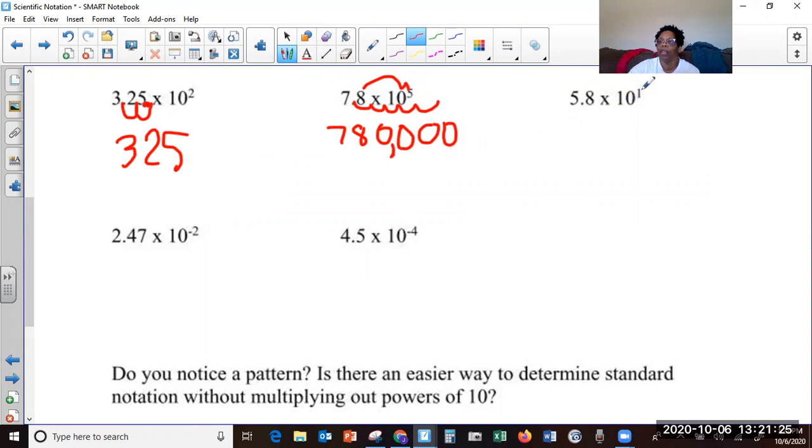This is a one. It tells me move the decimal one place forward because the one is positive. So that's five, eight.